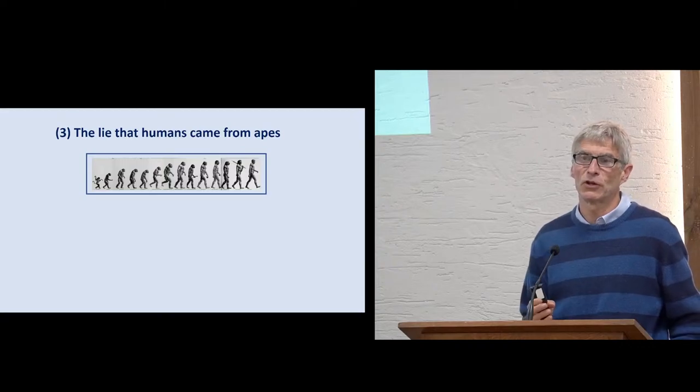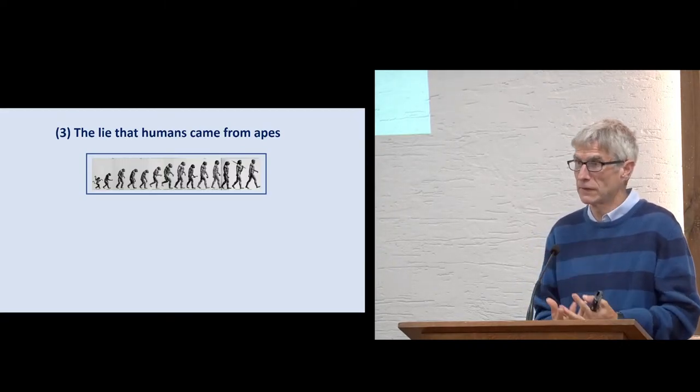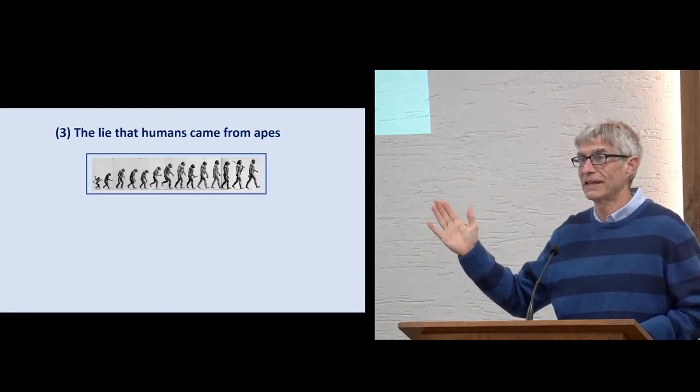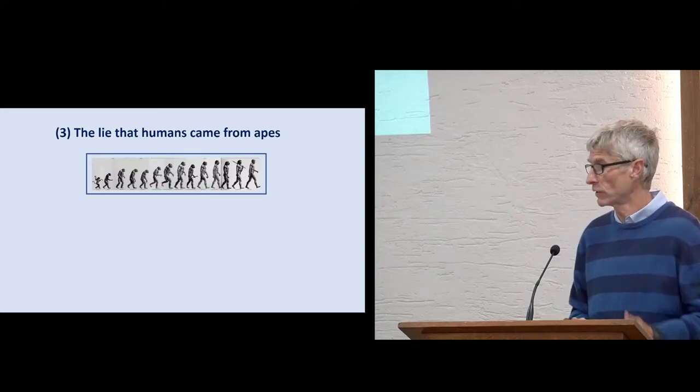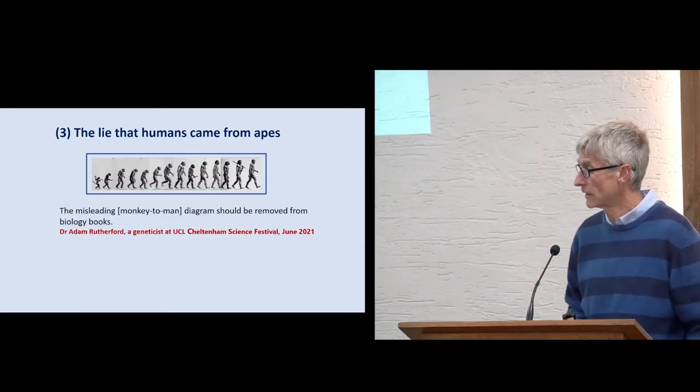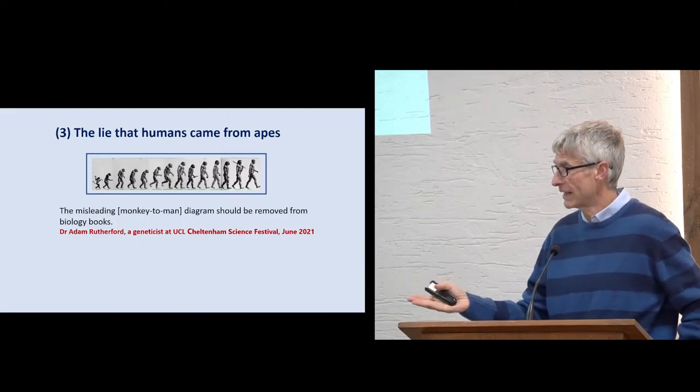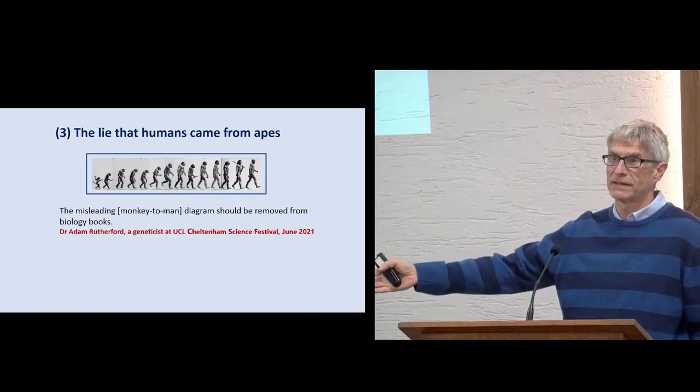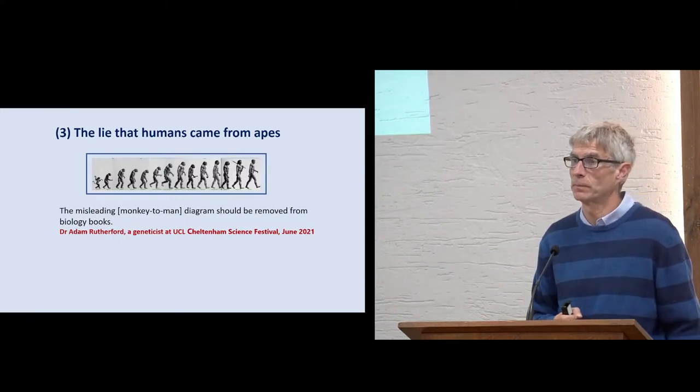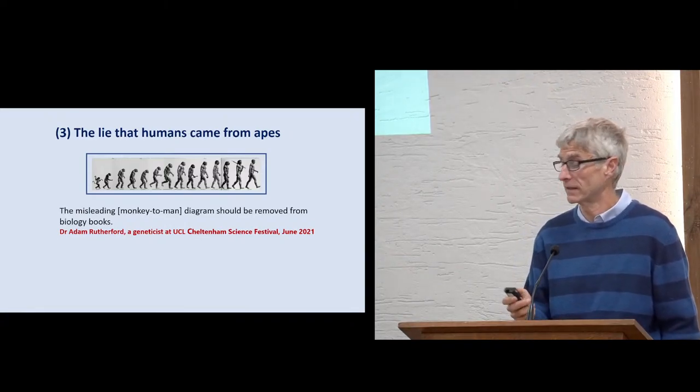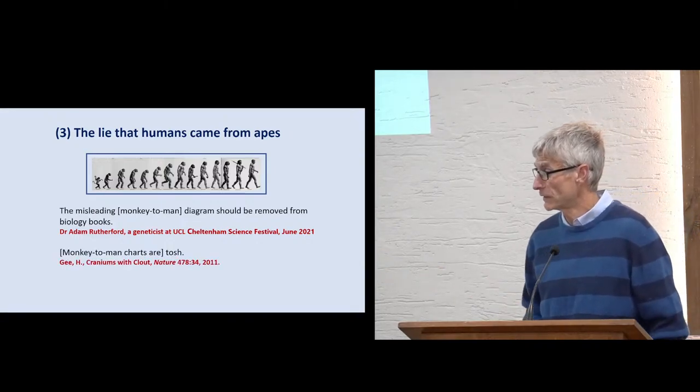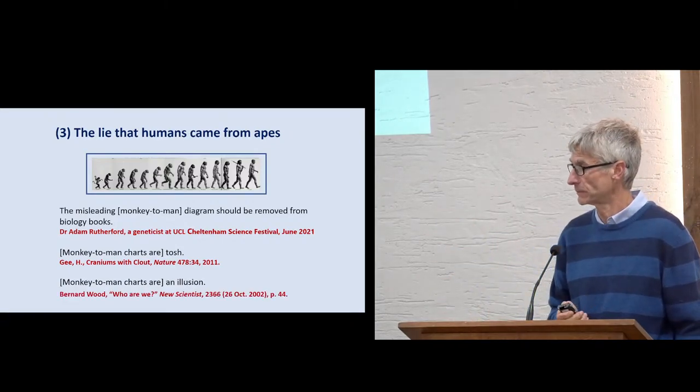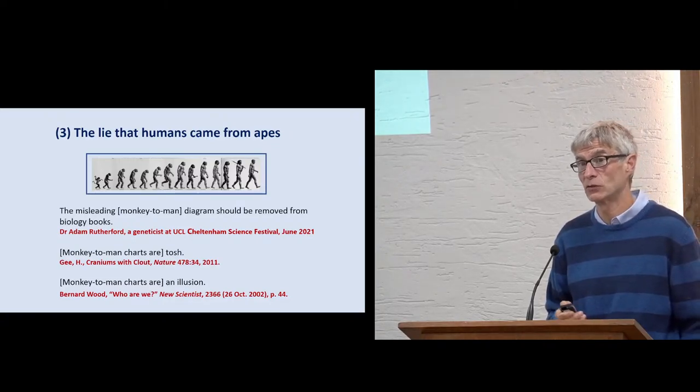Then there is the lie that humans came from apes. I can show you lots of quotations from scientists who believe in evolution, who will tell you this picture is fake, fake science, not just creationists who say that, but even evolutionists. Just to give you just a few examples. In 2021, not so long ago, Adam Rutherford, a geneticist at UCL, he believes in evolution, but he said these charts are misleading. They should be out of biology books, because there is no evidence for this kind of thing happening. They won't be taken out of biology books, because the humanists will not allow that to be taken out. Just to give you a couple of other quotations, monkey to man charts are an illusion, and the list goes on. So our children are taught fake science in schools and universities.